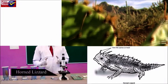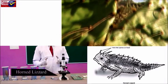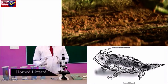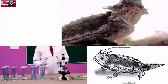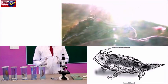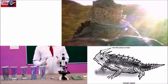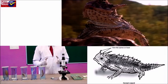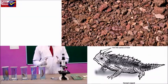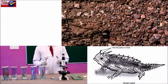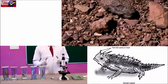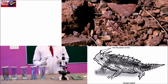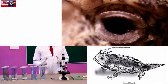Horned Lizard: It lives in desert and dry, sandy places. The body is broad and flat with spiny scales all over. Eyelids are complete and nostrils are provided with valves which prevent entry of sand. The tail is short and spiny.